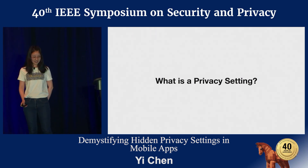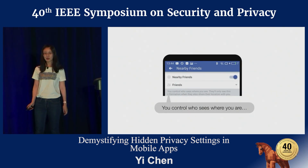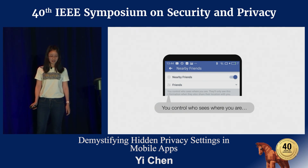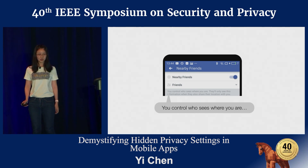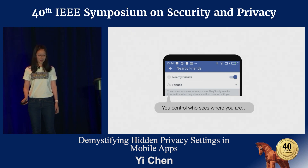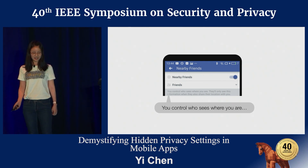Let's see what is a privacy setting. Take an example of Facebook. There is a setting named Nearby Friends. For a better service, Facebook uses users' current location to enhance social connections. To get users' agreement, they provide a setting in the app, and users can set it to decide who can see their current location to protect themselves.